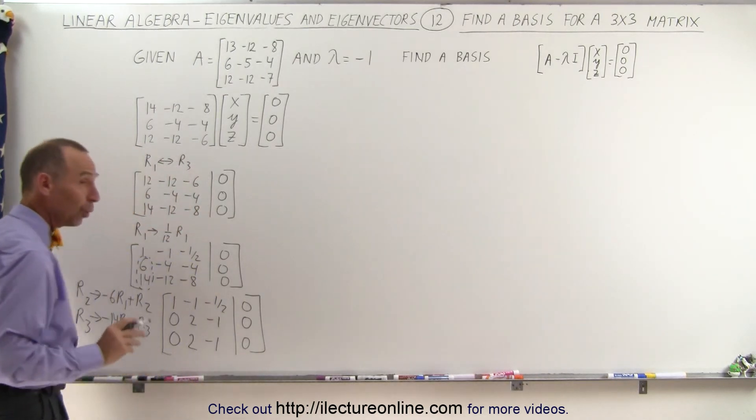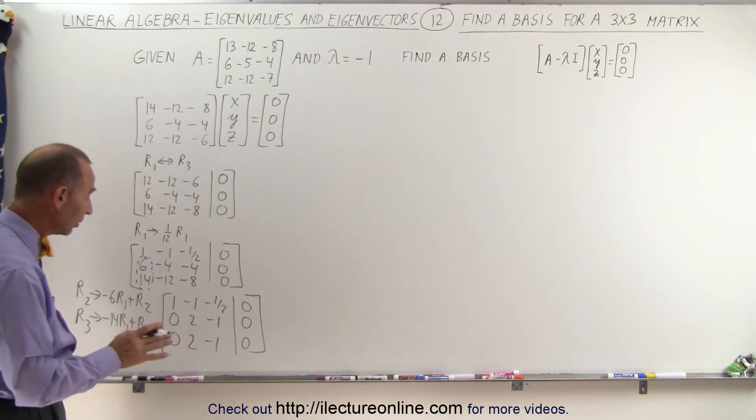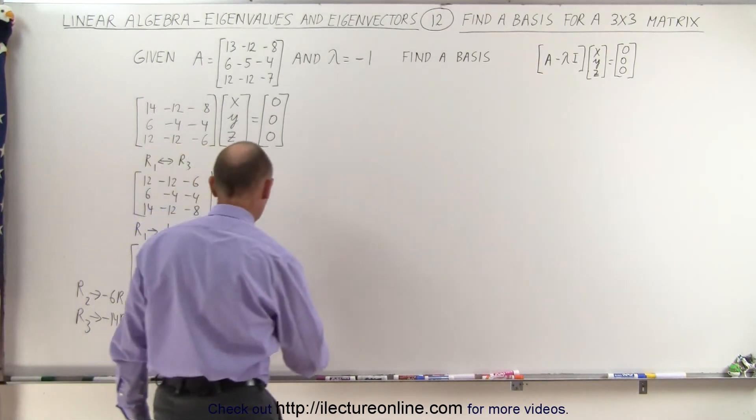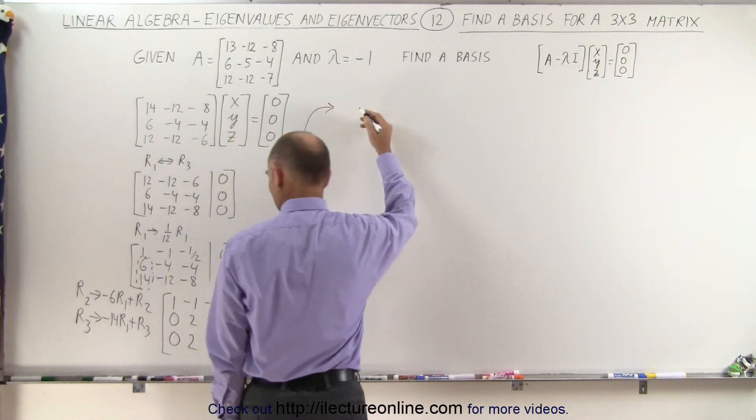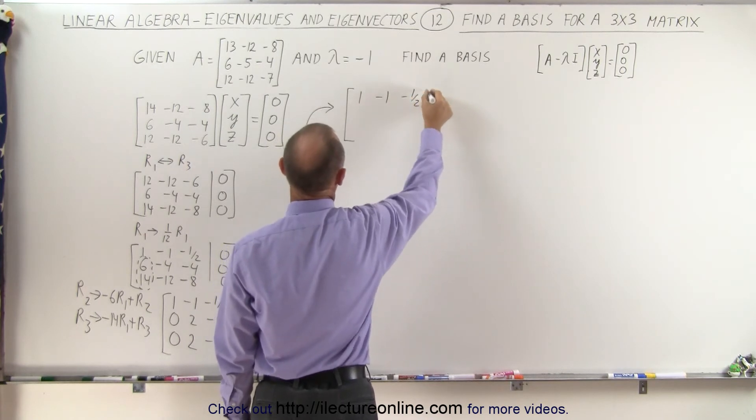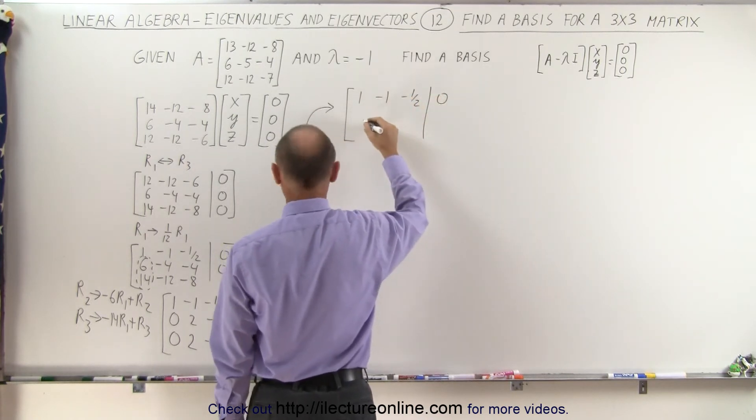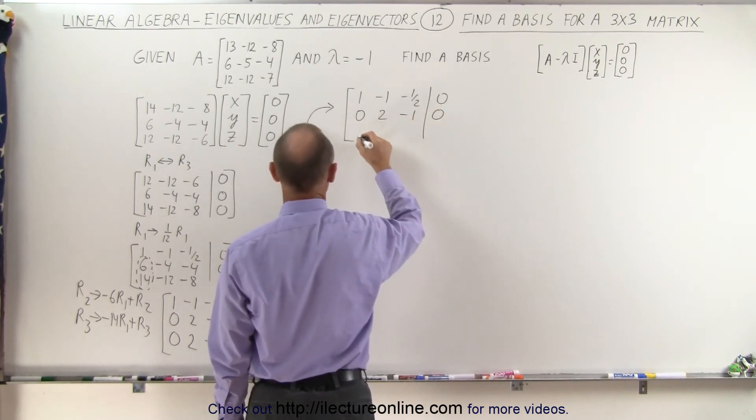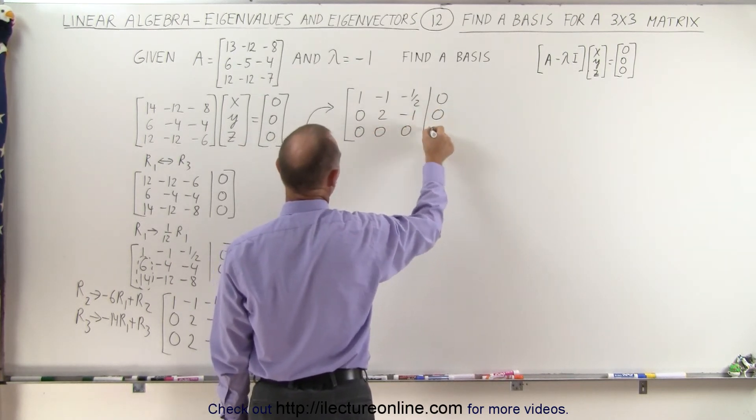And now notice that row 3 and row 2 are identical, which means we can eliminate one of the two rows, and this will become as follows. So we're going to eliminate the bottom row 1, negative 1, negative 1 half, 0. Then we get 0, 2, negative 1, and 0. And here we get 0, 0, 0, 0, and 0.